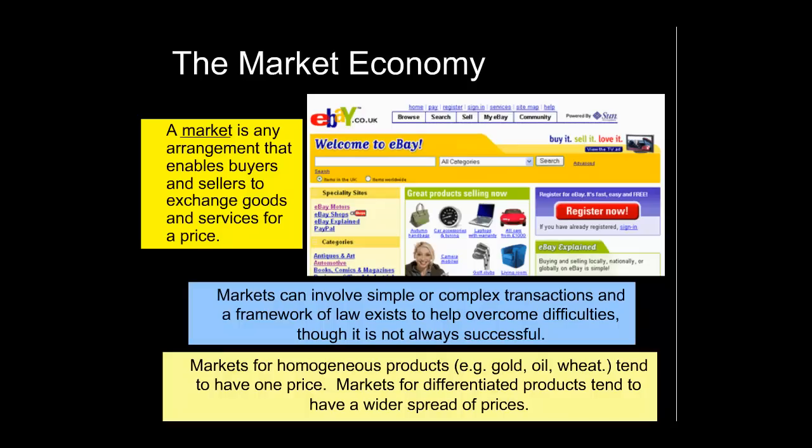Markets can be any sort of institutional arrangement. We can think about the local market in a town centre, or indeed just the local shop, or we can think about using the internet. Indeed, eBay is a magnificent example of where buyers and sellers come together to determine the price of a good. And there are lots of things sold on eBay, for example.